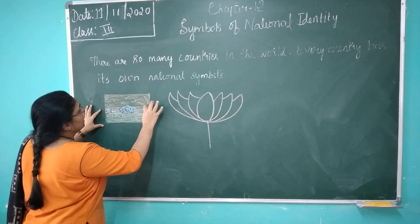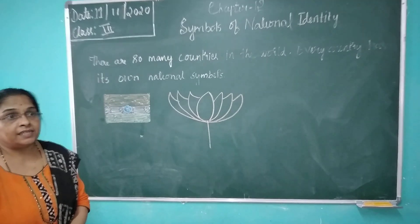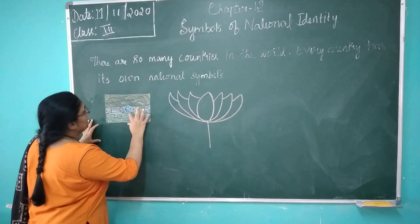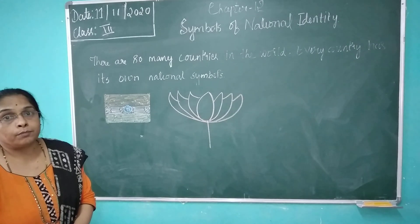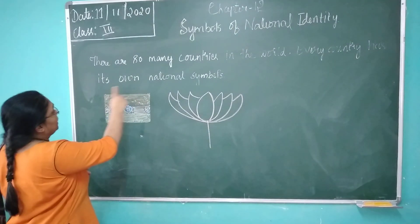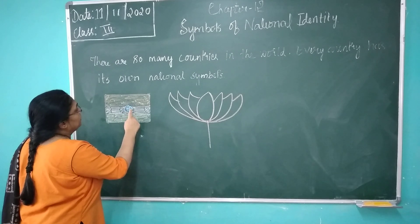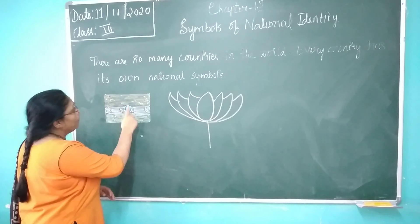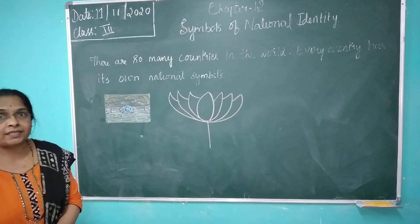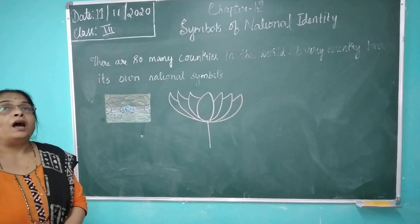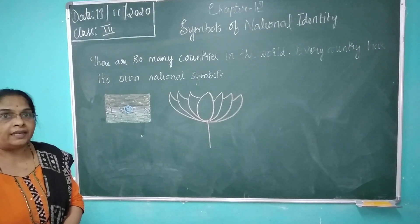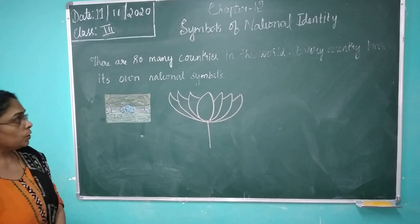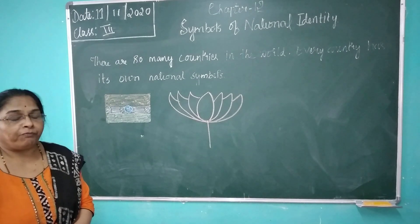The second color is white, which stands for truth and peace. The third color is green, which stands for growth and prosperity. In the middle of the Tiranga there is the Ashoka Chakra, which has 24 spokes. We hoist the Tiranga on Independence Day and Republic Day to celebrate our national festivals.